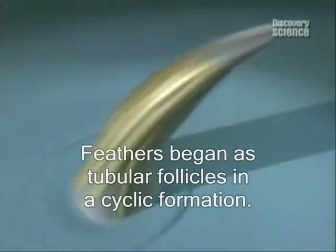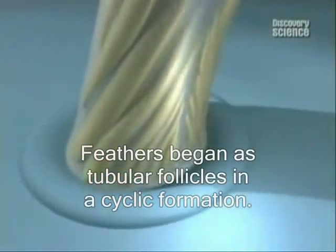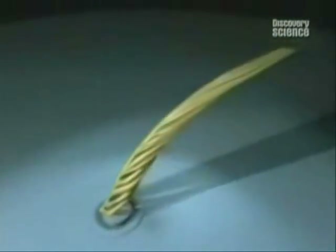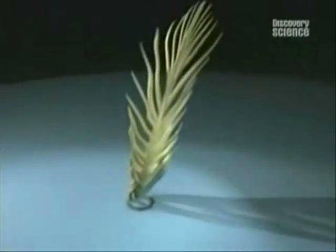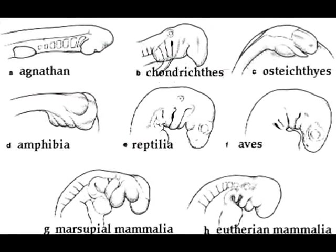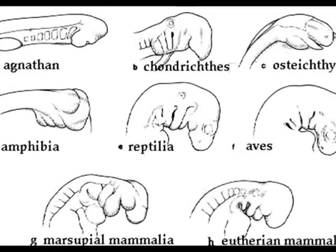Among other discoveries, this field revealed the evolutionary origin of the feather as implied by transitional stages in the fossil record and summarized in the formation of feathers in developing chickens. It is no hoax that mammalian embryos temporarily have pharyngeal pouches which are morphologically indistinguishable from the gill slits in modern fish embryos, and that the divergence of development from there matches what is indicated in the fossil record.